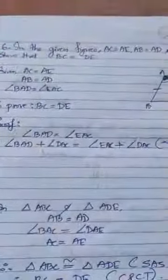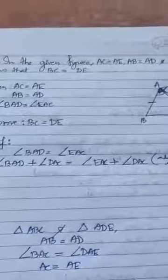In question number six, in the given figure AC equal to AE, AB equal to AD, and angle BAD equal to angle EAC. We need to show that BC equal to DE.